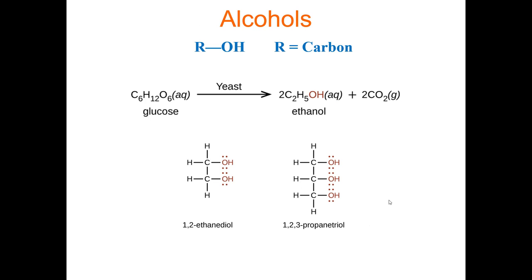First, let's look at alcohols. Alcohols are any compound that contains a carbon — R is some carbon-containing group — bonded to an OH. So if there's an OH on some carbon, we call that an alcohol. Here's a reaction: the biofermentation of ethanol. Yeast can process glucose, which is a sugar, and create ethanol. This is what happens inside beer — the ethanol is what gets you drunk, and the carbon dioxide released is what makes the beer bubbly. So alcohol is a carbon group (C2H5) that also has OH.